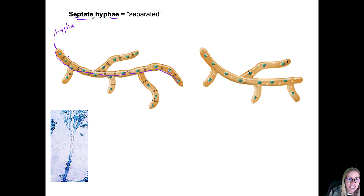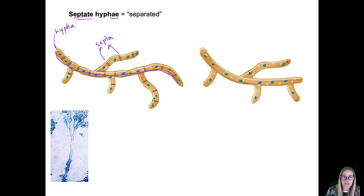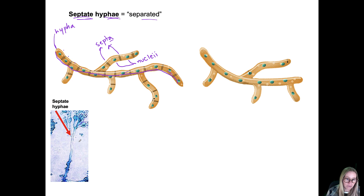If they are septate, that means they have septa separating the cells. I think of the septa as like little doors that separate the rooms, and the rooms are like where each nucleus of the cell is hanging out. So these are little nuclei separated by septa — septate hyphae. You can actually see the septa under the microscope.